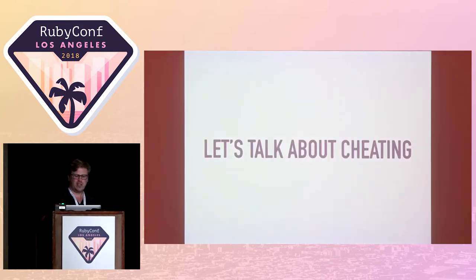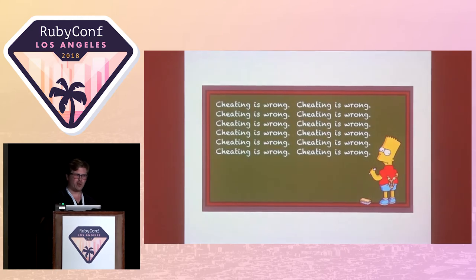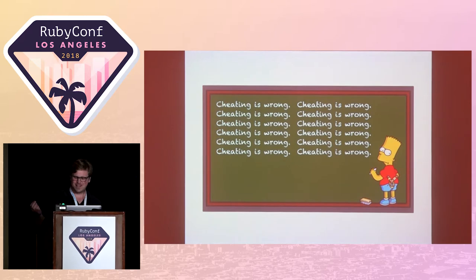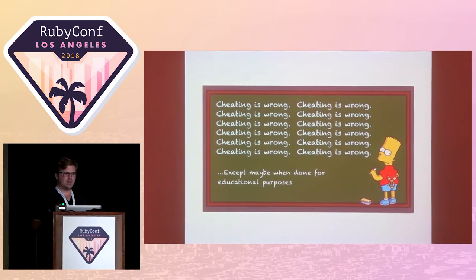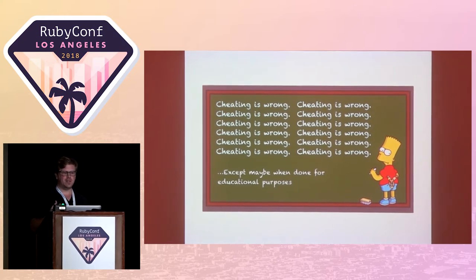So let's talk about cheating. Chances are, if you have any moral compass, you understand that cheating is wrong. So why are you here? Well, hopefully you think I'm super handsome, and you understand that occasionally cheating can be a good thing for educational purposes. Cheating, in this case, was my opportunity to explore some elements of Ruby I hadn't gotten to explore before, like image manipulation and computer vision. And it also helped unblock me from this game called Pet Detective, which we're going to talk about in some serious depth.